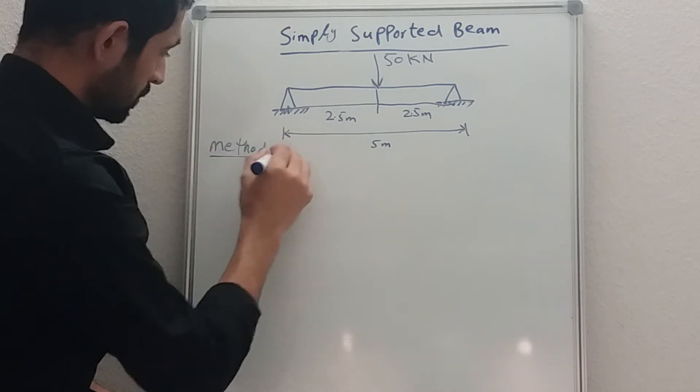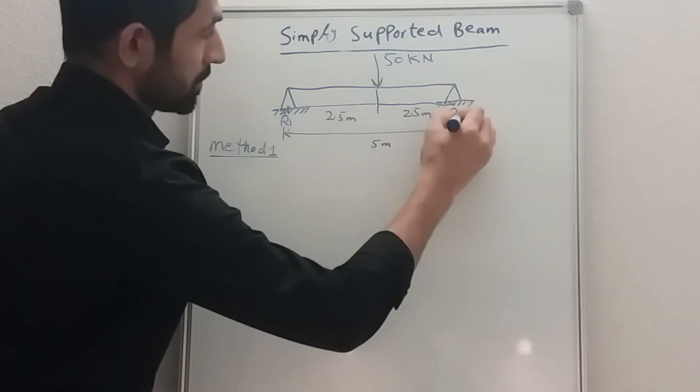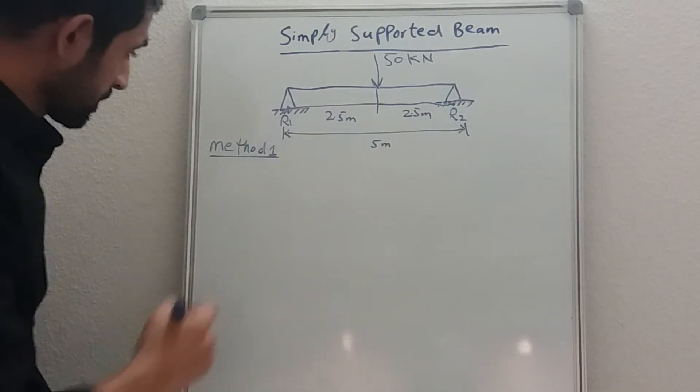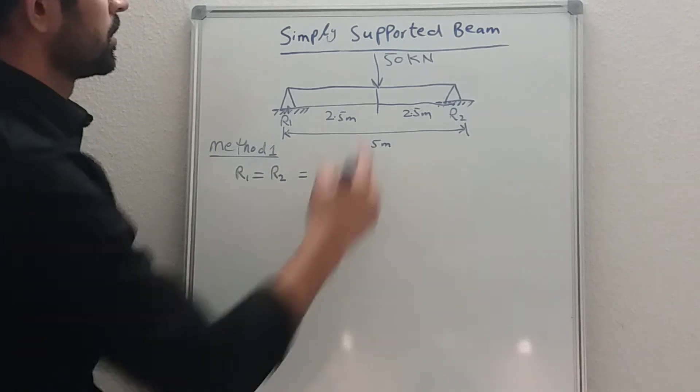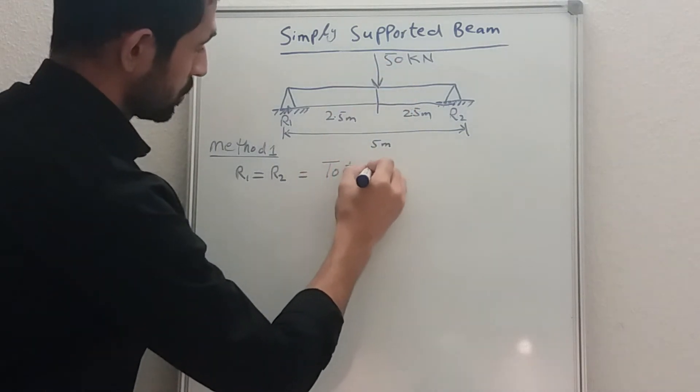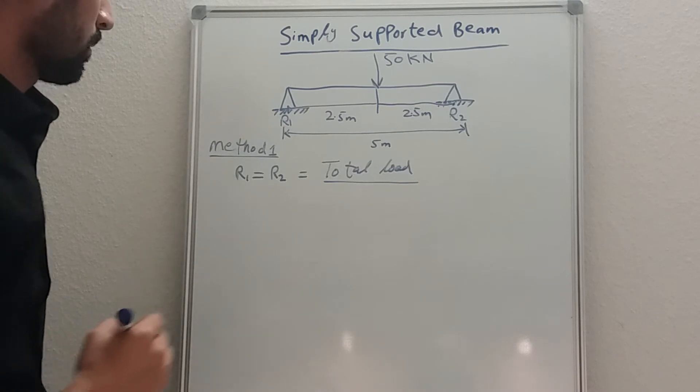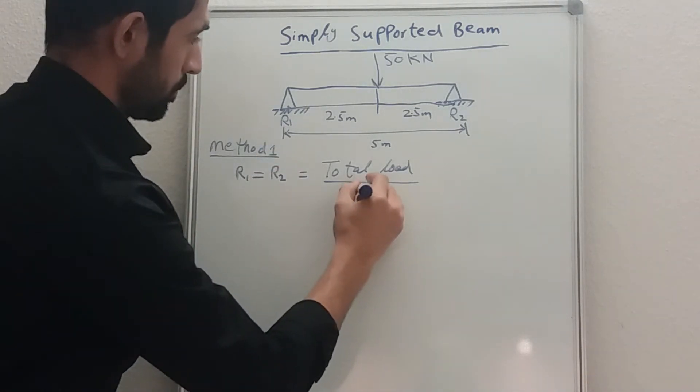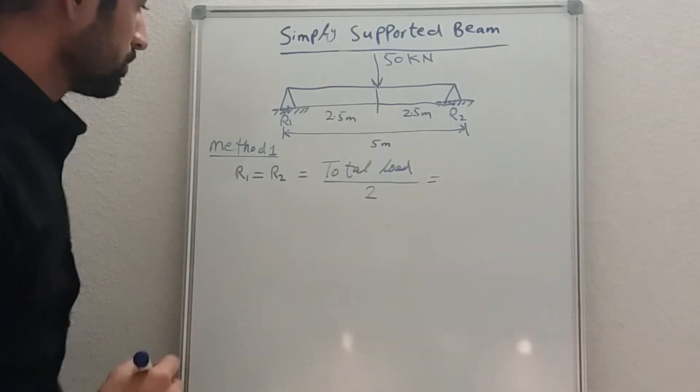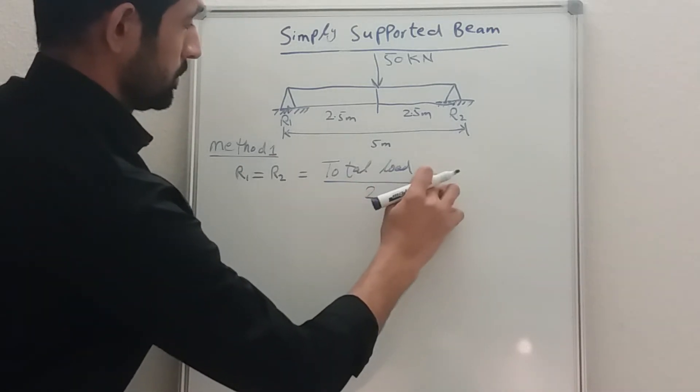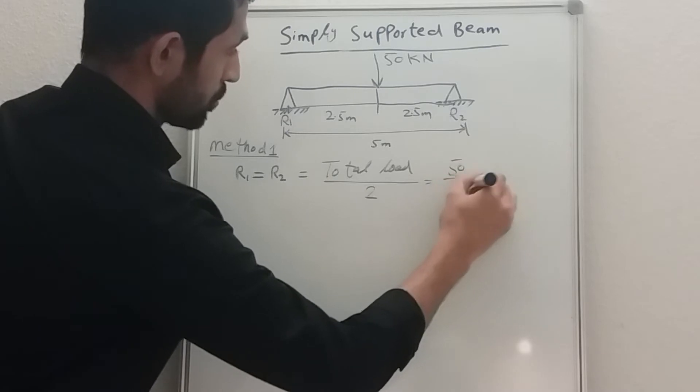Method one, so you can get the answer just only in one line. So this is our reaction one, this is our reaction two. Okay, so R1 is equal to R2 is equal to, we have this is the formula: total load divided by 2.